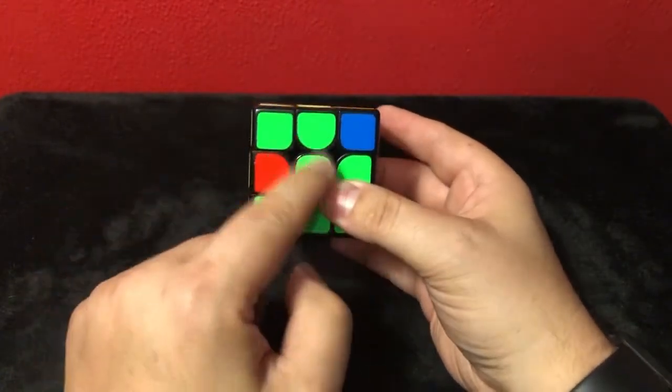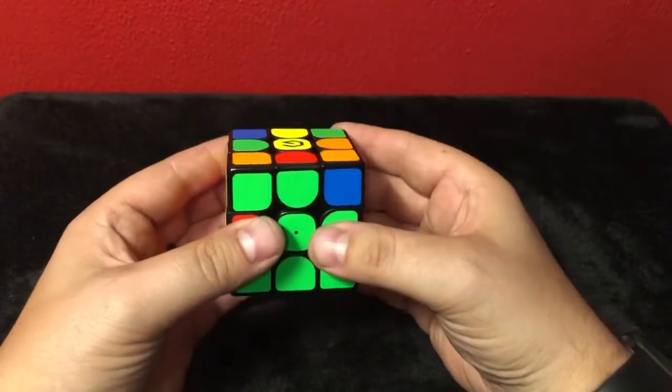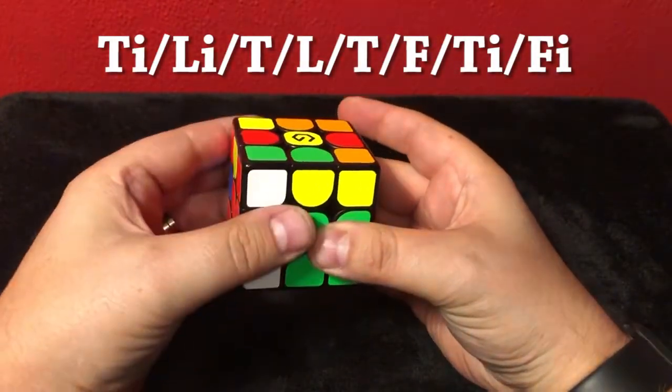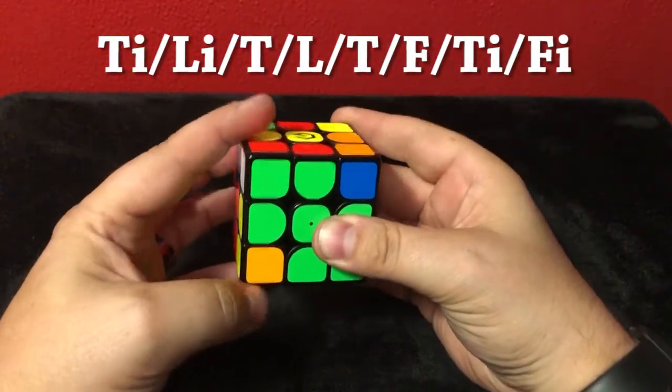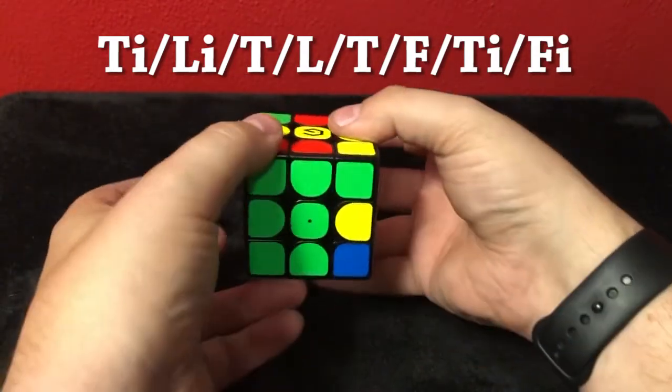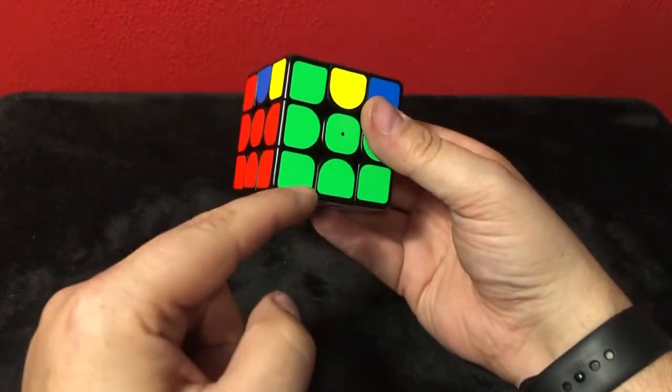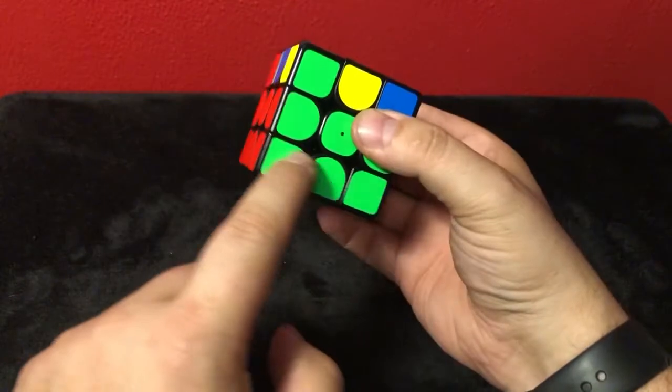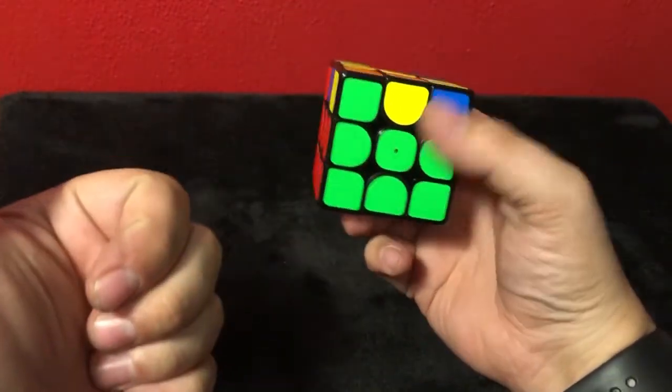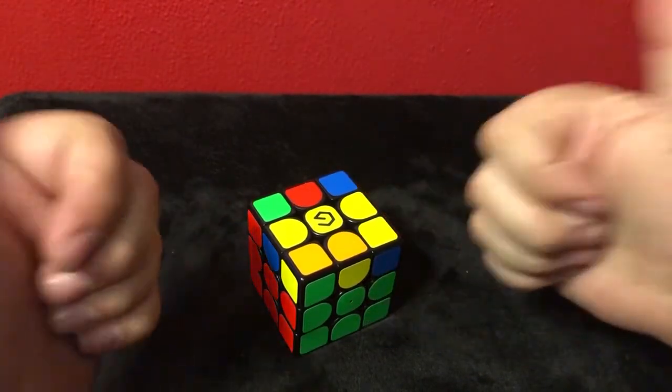So let's find it. Oh, there it is. Green side, red has to go to the left. Perfect. We get to do that again. So the algorithm, top inverted, left inverted, top side, left side, top side, front side, top inverted, and front inverted. Boom. And there it is. You just solved all the white, all of the first layer, and now all the second layer. Awesome. Congratulations. We're almost done. We're so close.